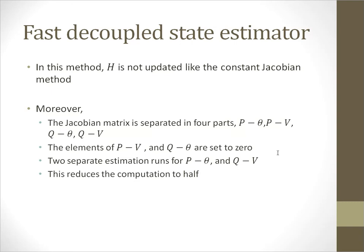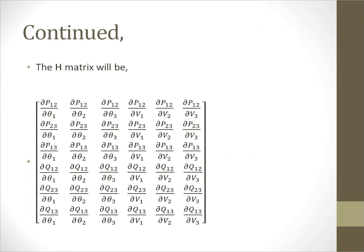We do two separate estimations for P-theta and Q-V. For example, we had the first part of the Jacobian matrix like this. It will be separated in four parts: P-theta, P-V, Q-theta, and Q-V. The elements of P-V and Q-theta will be set to zero.